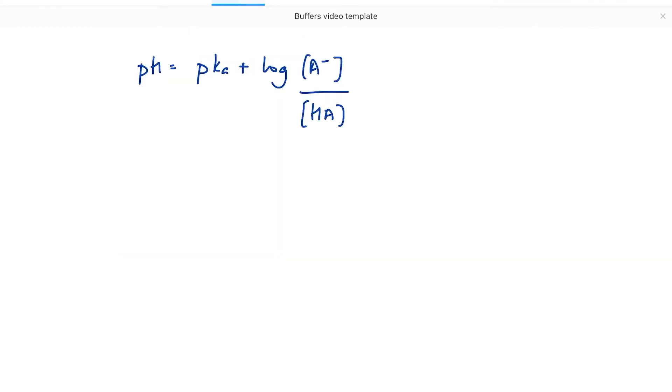If I were to solve this problem using the Henderson-Hasselbalch equation, then I have pH equals pKa plus log A- over HA. Once again, my ratio is not the correct way around for the answer in terms of the way the question was asked. So I'm going to rewrite that. pH is equal to pKa minus the log of HA over A-.